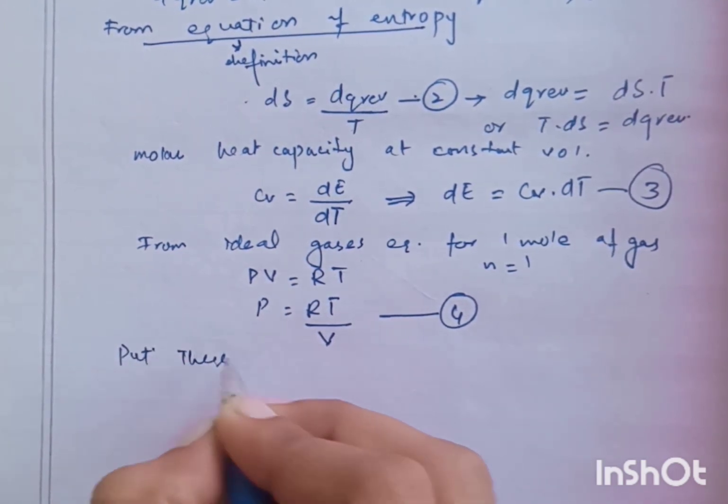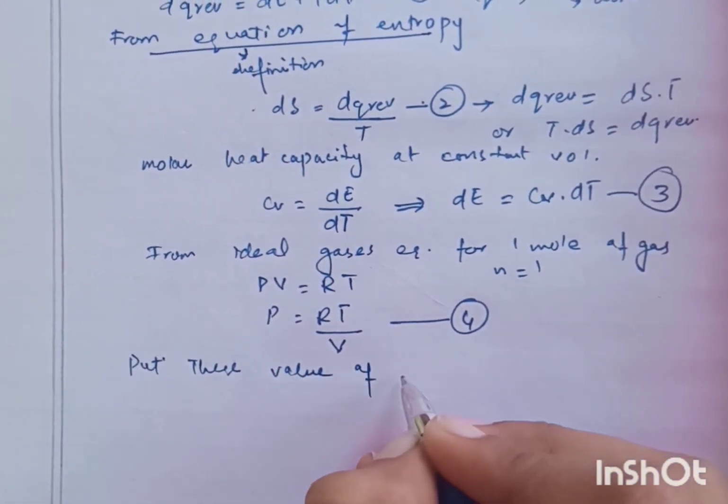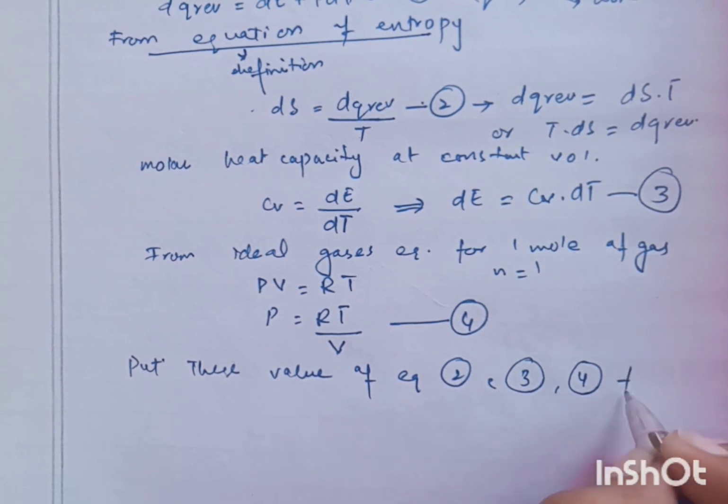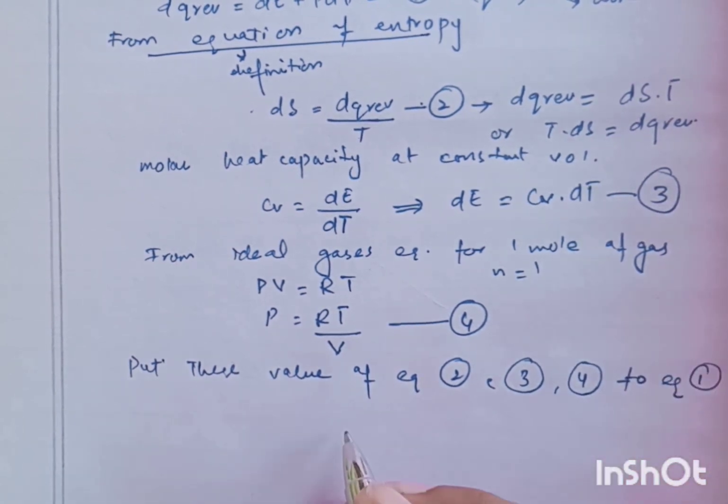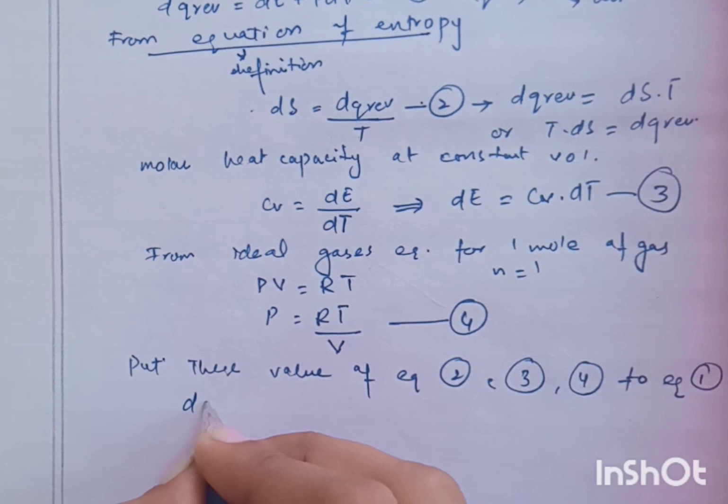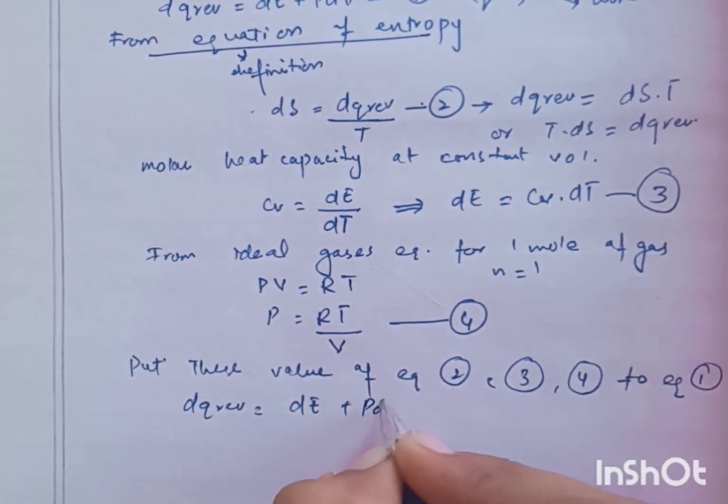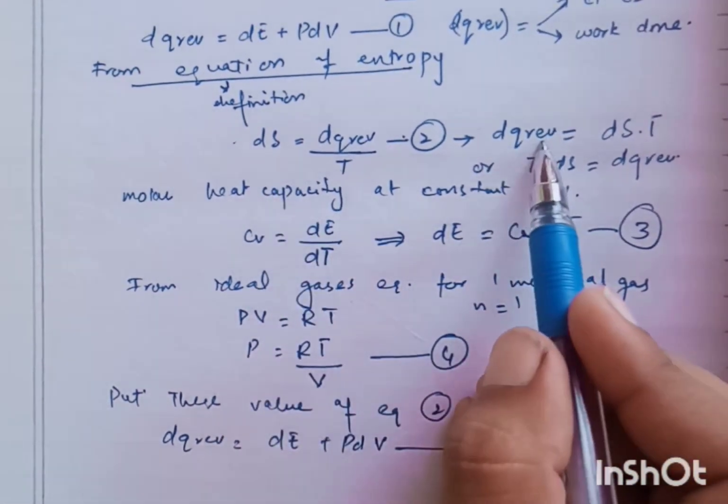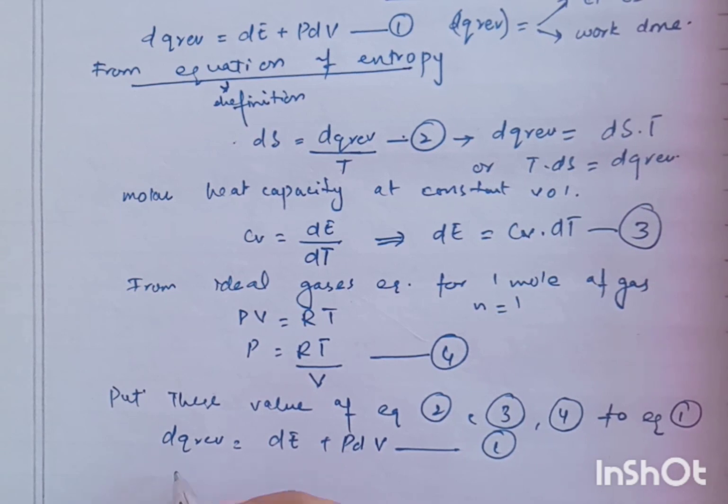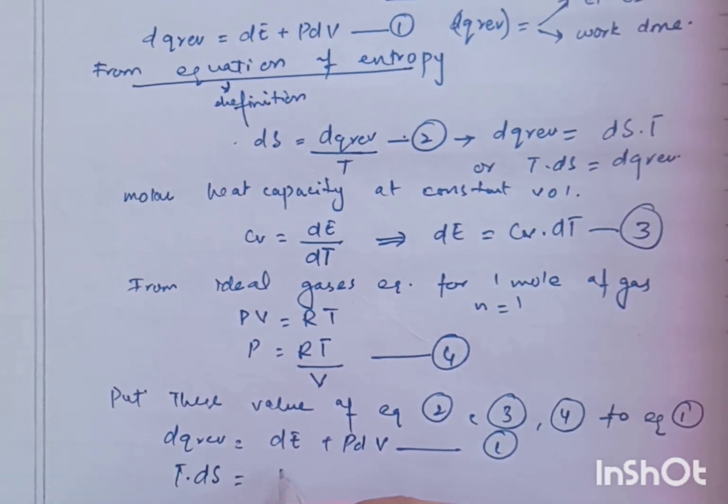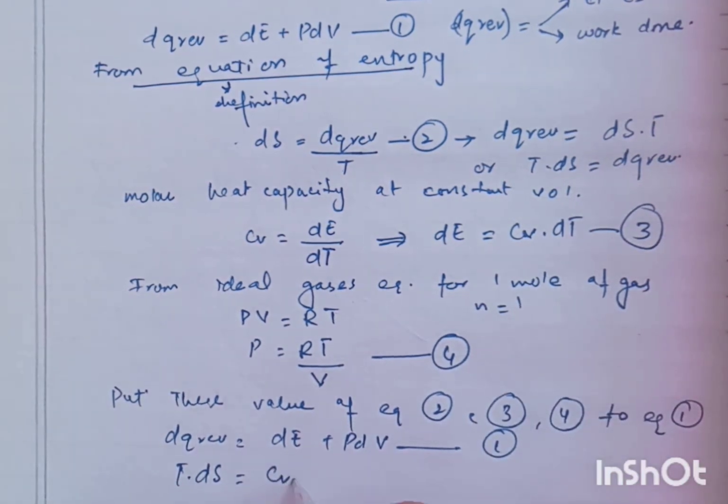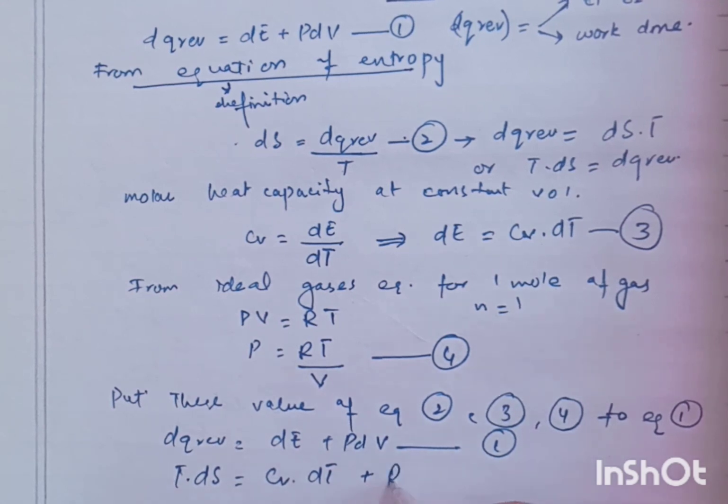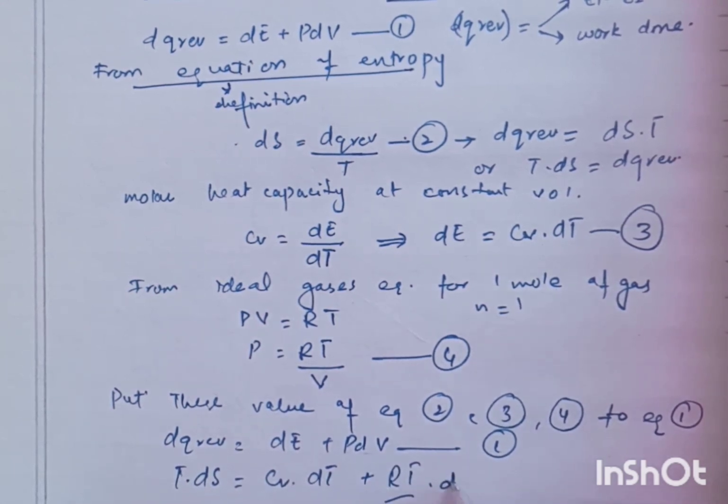Put these values of equation 2, equation 3 and equation 4 to equation 1. We know DQ reversible equals to DE plus PDV. That was equation number 1. Now put these values. DQ reversible equals to DS into T or T into DS equals to DE equals to CV into DT, CV into DT plus RT over V, P equals to RT over V into DV.